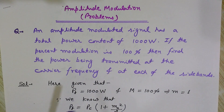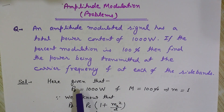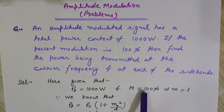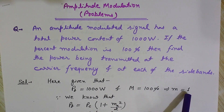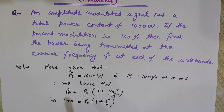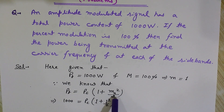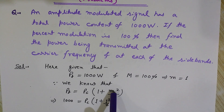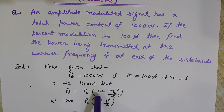From the given conditions: total power PT = 1000 watts, and modulation index M = 1. The basic formula to use is: PT = PC × (1 + M²/2), where PC is the carrier power and M is the modulation index for amplitude modulation.